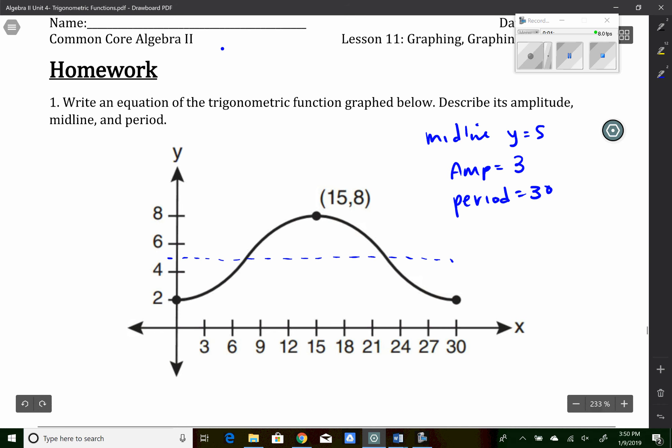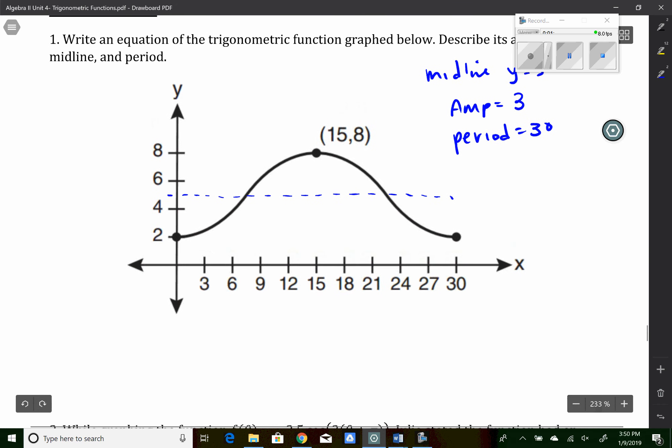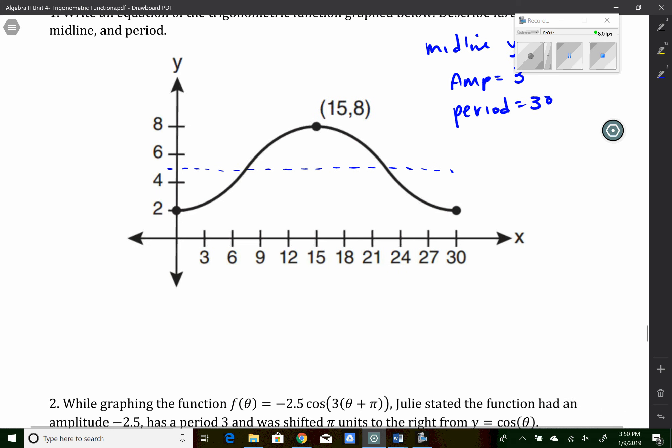Now to write an equation, I don't want the period. I want to know the amplitude, the frequency. So I know that the period times the frequency equals 2 pi. So if the period is 30, I can divide both sides by 30, and I can get a frequency of pi over 15.